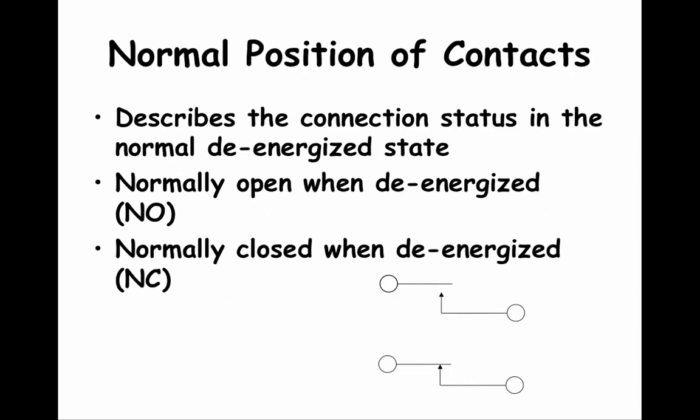Another characteristic is the normal position, which tells us the relay or valve position in the de-energized state. The normally open circuit means that when the relay is not energized, the load circuit is open. The normally closed circuit means that the relay will be connected when it is not energized.